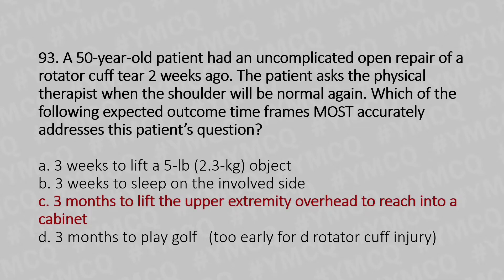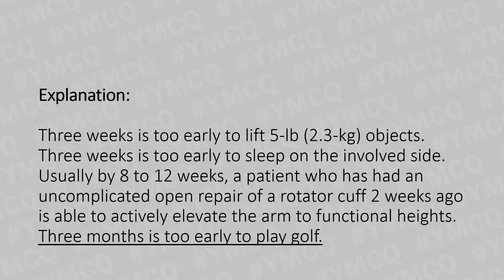And the answer is Option C: 3 months to lift the upper extremity overhead to reach into a cabinet. Three weeks is too early to lift 5 lb (2.3 kg) objects, and 3 weeks is too early to sleep on the involved side. Usually by 8 to 12 weeks, a patient who had an uncomplicated open repair of the rotator cuff 2 weeks ago is able to actively elevate the arm to functional heights. Three months is too early to play golf.